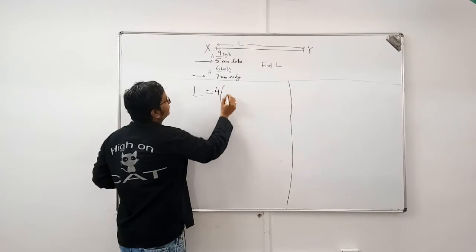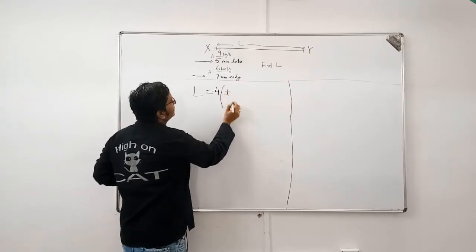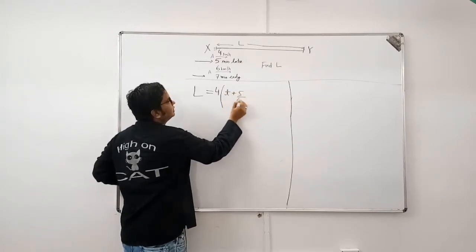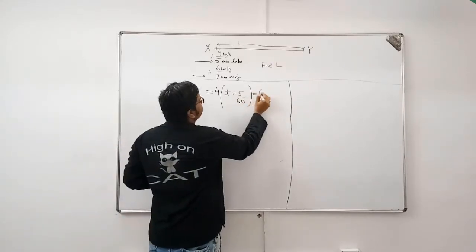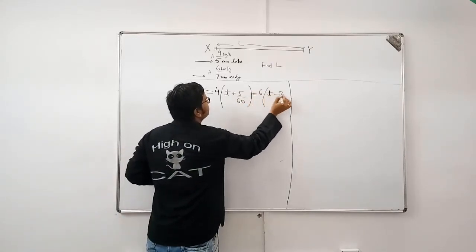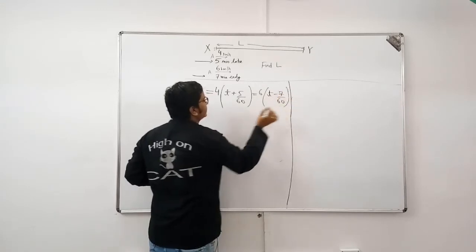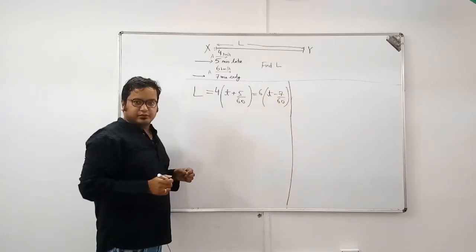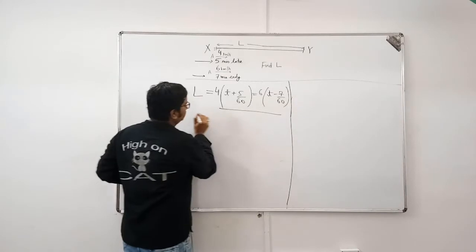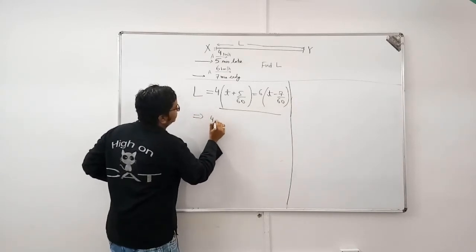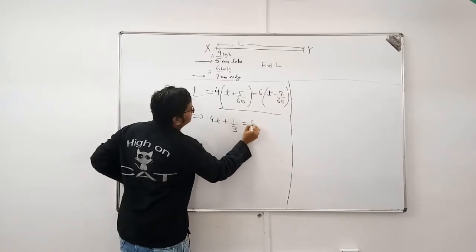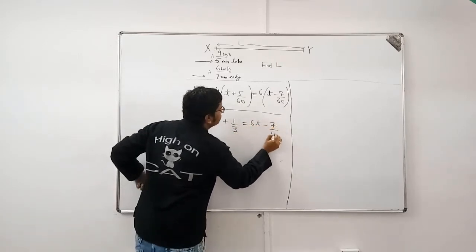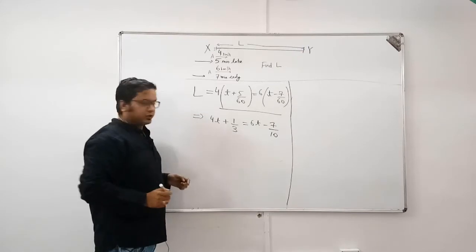4 km per hour time will be T since he was 5 minutes late plus 5 by 60. In the next case, 6 into T minus 7 by 60 because he was 7 minutes early. Now, equating these two, 4T plus 1 by 3 is equal to 6T minus 7 by 10.